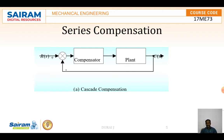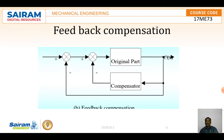The flow of signal in such a series scheme is from lower energy level towards higher energy level. Therefore additional amplifiers are required to increase the gain and to provide the necessary isolation. The number of components required in the series scheme is more than in parallel compensation.